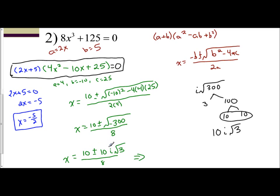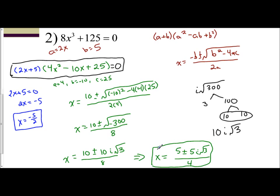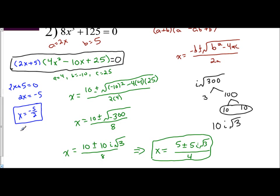Looking at the terms 10, 10i, and 8, they're all even, so divide them all by 2. I get x equals 5 plus or minus 5i square root of 3 over 4. Those are my imaginary solutions. My real solution is x equals negative 5 halves. This is how you solve cubic equations by factoring — factor into sum or difference of cubes, solve for the real answer easily, then use the quadratic formula for the quadratic factor and simplify.